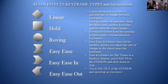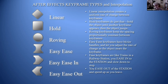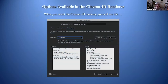Keyframe types and interpolation — remember the shapes of the keyframes. The default is linear, which looks like a diamond, creating a uniform rate of change. Hold keyframes stay until the next keyframe, then jump. Roving keyframes keep spacing proportionally constant. Easy ease has bezier handles and smooths the rate of change as the object nears the keyframe. Easy ease in is like a train slowing into a station, and easy ease out is speeding up as you leave the station.